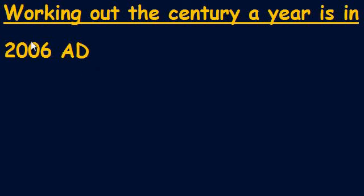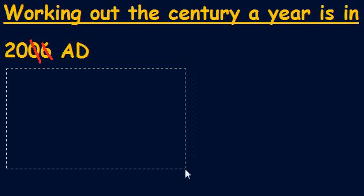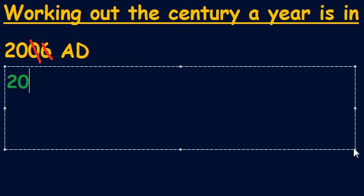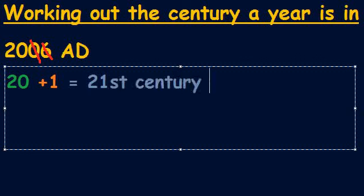The first thing we do is cross off the last two numbers of our year, so we're left with just 20 by itself. This is what we always do when working out what century a year is in. We take that 20 and then add 1 to it — we always add 1 every single time. That gives us an answer of 21, which means 2006 is in the 21st century AD.